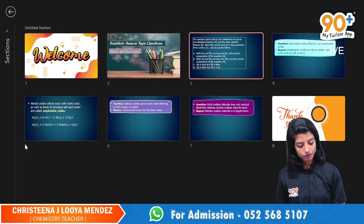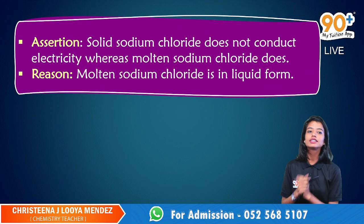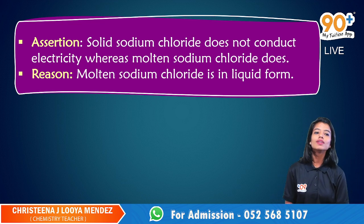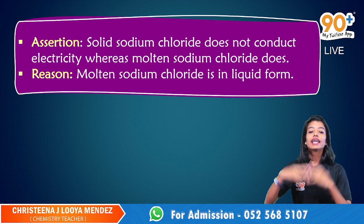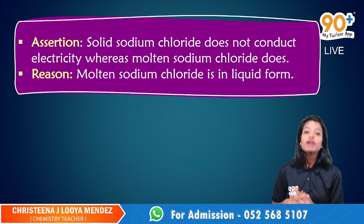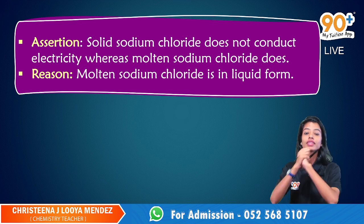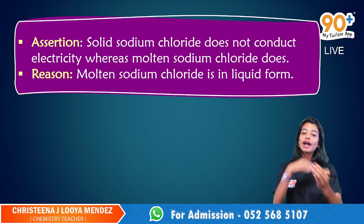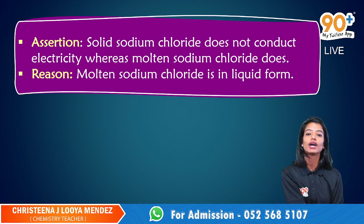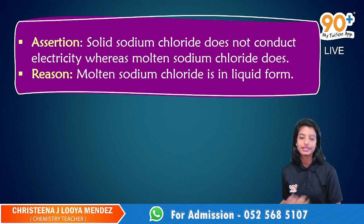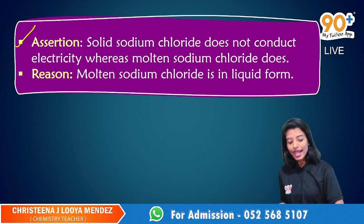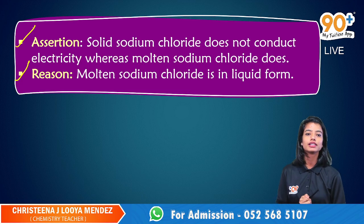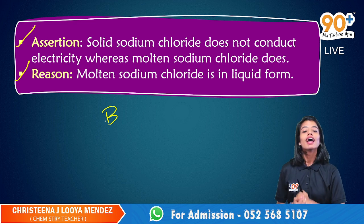Very good, well guessed. Now the last one. Assertion: Solid sodium chloride does not conduct electricity, whereas molten sodium chloride does. That's correct — in the solid state, ionic compounds cannot conduct electricity because the ions are held together by a strong electrostatic force of attraction and cannot be separated. But when heated, it becomes molten, where the ions are free to move and they conduct electricity. The reason states: Molten sodium chloride is in liquid form. That is again correct. Assertion is true and reason is again true, but the given reason is not the correct explanation for the assertion, which falls into option B — assertion and reason are true but reason is not the correct explanation for the assertion.